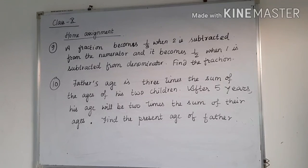The next question: A fraction becomes 1/3 when 2 is subtracted from the numerator and it becomes 1/2 when 1 is subtracted from the denominator. Find the fraction. Number 10: Father's age is 3 times the sum of the ages of his 2 children. After 5 years, his age will be 2 times the sum of their ages. Find the present age of the father.